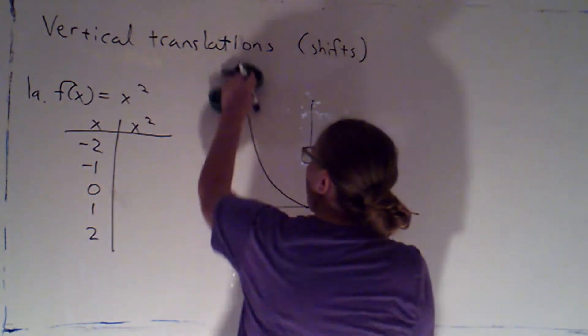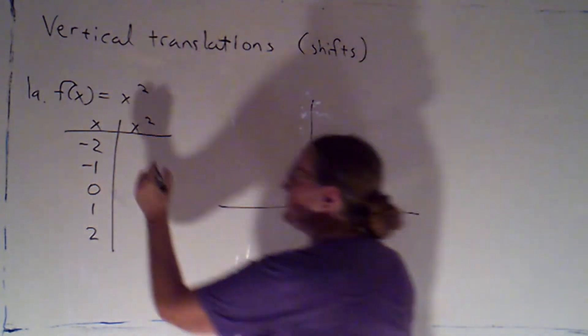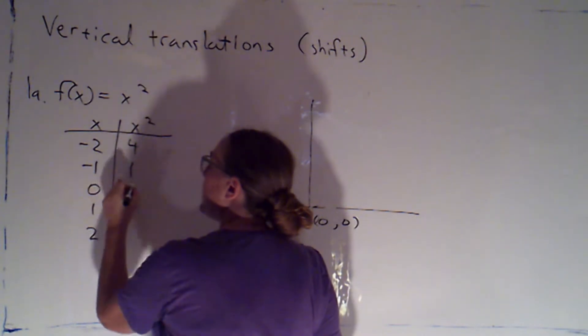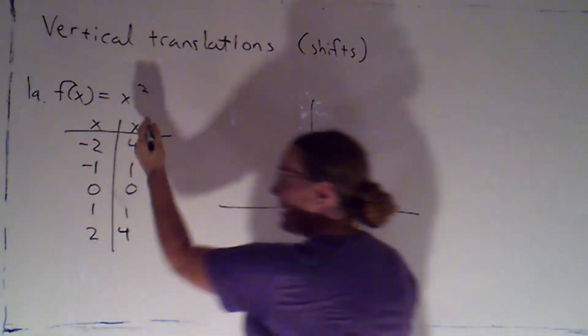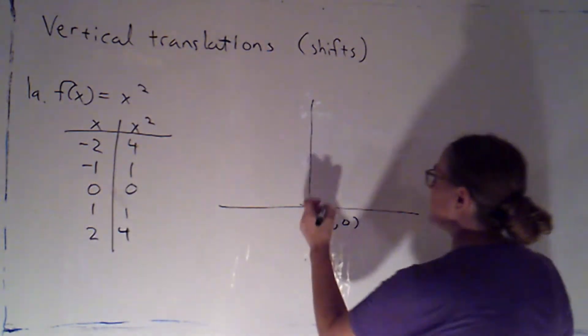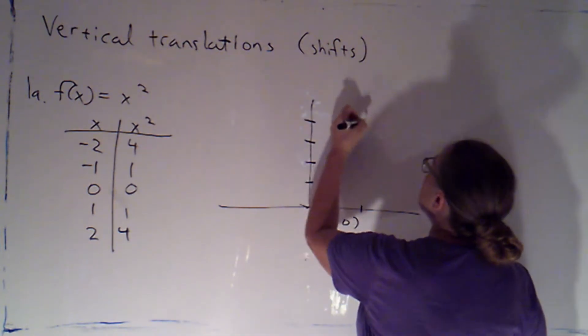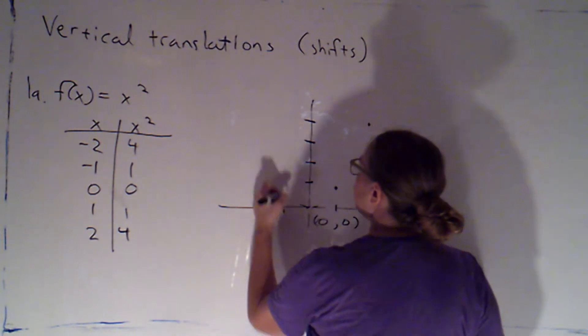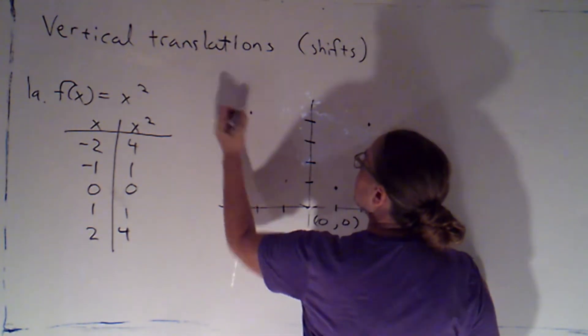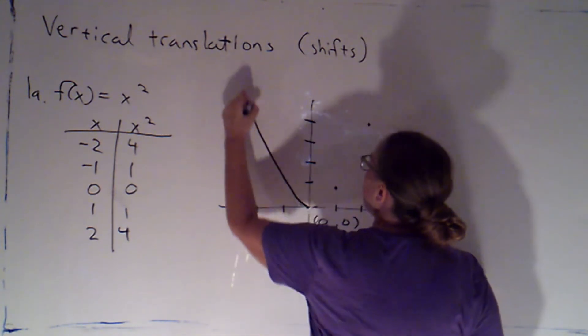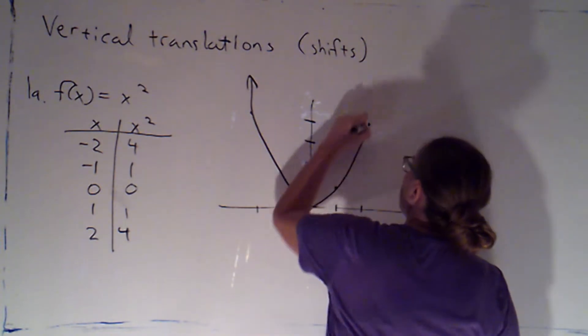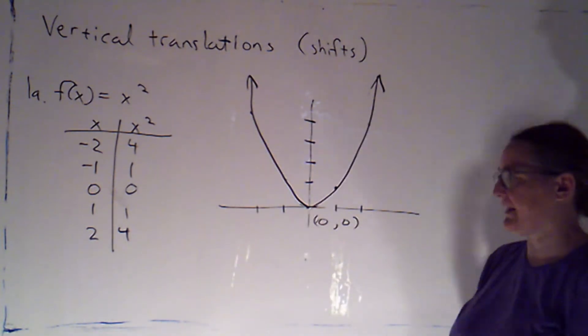Now, I'm going to complete this table of values. This is just a repeat of what we did in learning the parent function, so this should go fairly quickly. There's my point 1, 1; 2, 4; negative 1, 1; negative 2, 4. So there's my parabola right there.